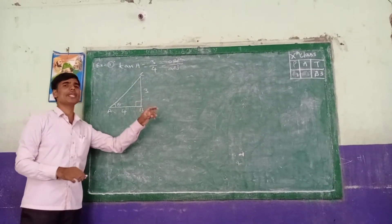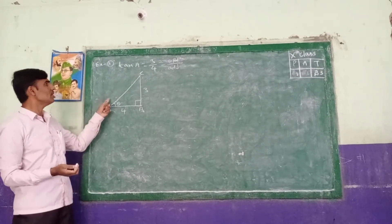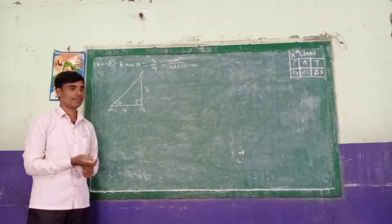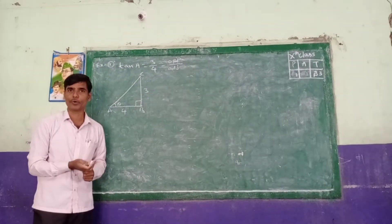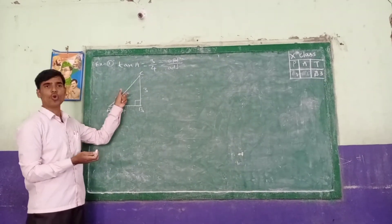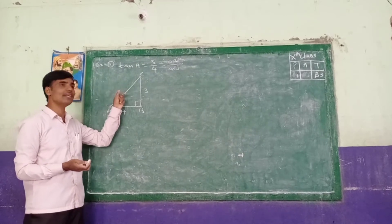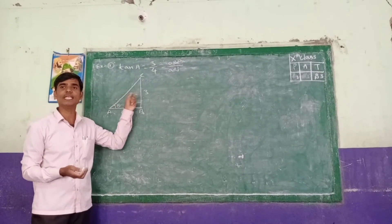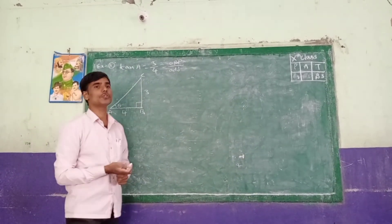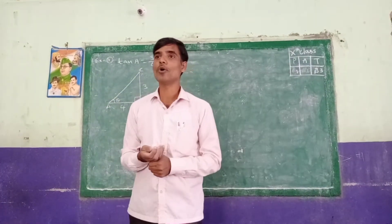So we have to find the remaining trigonometric ratios. We need to know all three sides, meaning we also need to find the hypotenuse AC. We have to use the Bodhyayana theorem to find AC.